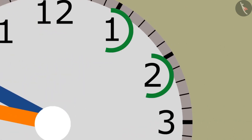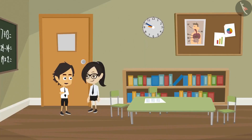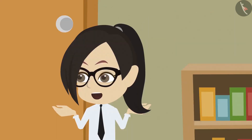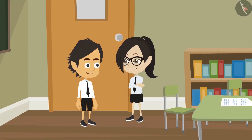How are you counting the minutes? Look at the numbers on the clock. The small markings in between them tell the minutes. These have to be counted to find out the minutes. Then how will we find out how many minutes have passed?